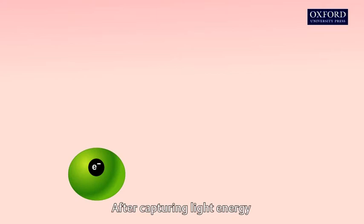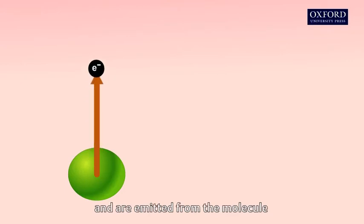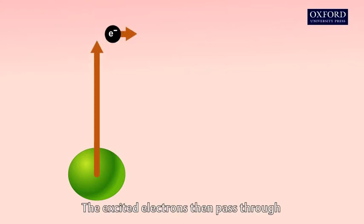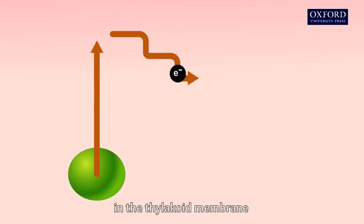After capturing light energy, some electrons of the chlorophyll molecule are raised to a higher energy level and are emitted from the molecule. The excited electrons then pass through a series of electron carriers in the thylakoid membrane.